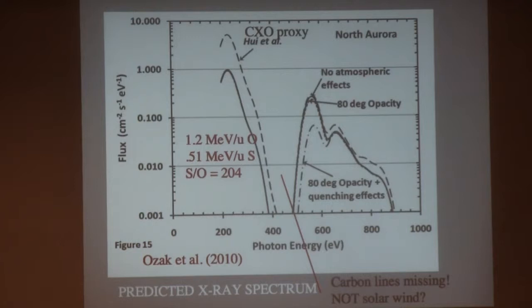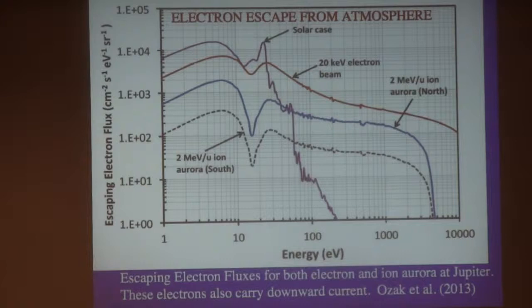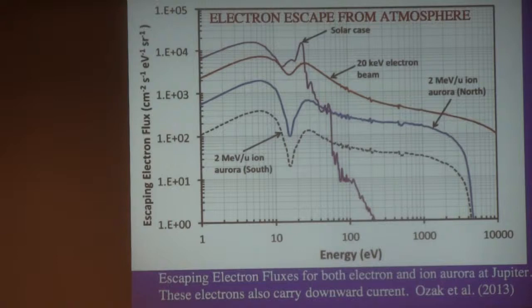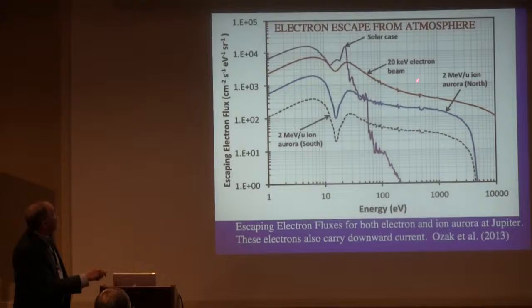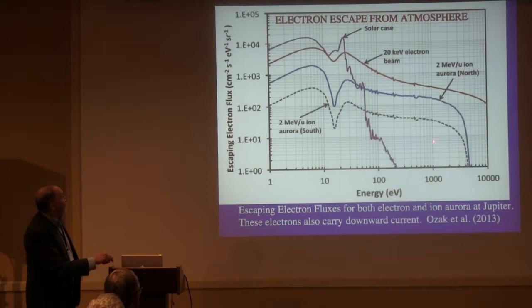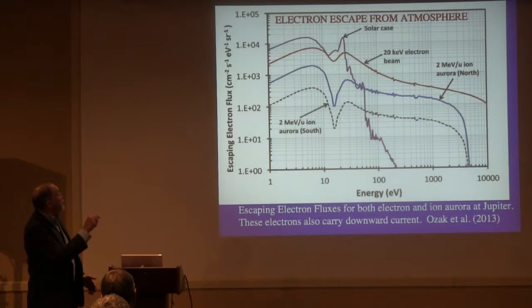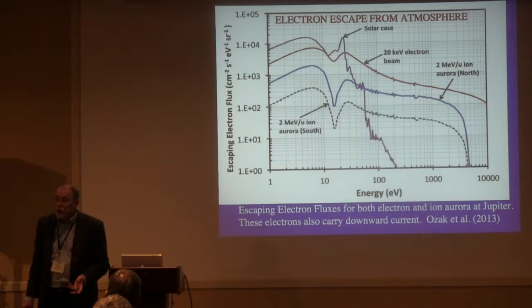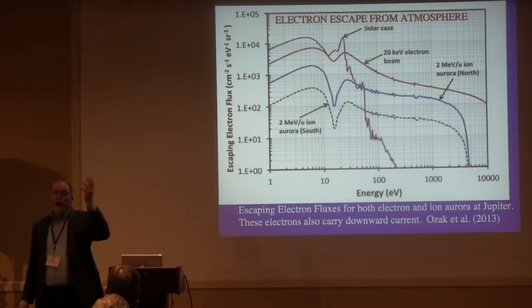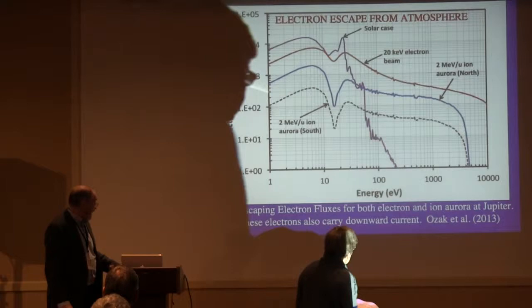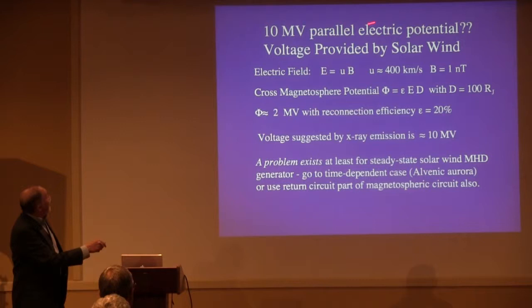We get a reasonable spectrum that sort of agrees. Let me get to some of the MI coupling aspects. From our model, these are the electrons escaping from the atmosphere. We tuned to a specific X-ray observation — this is the North Aurora for a mixture of sulfur and oxygen, this is the South Aurora. These are the electrons coming back out of the atmosphere into the magnetosphere. We also did it for a 20 kV electron auroral beam for comparison, and we did it for photoelectrons. Now, if you are under a field-aligned potential region that accelerated your ions from 50–100 kV in the magnetosphere to 10 MeV, the electrons will be accelerated to 10 MeV going outward. So you need a 10 MeV parallel electric potential — that's an issue.